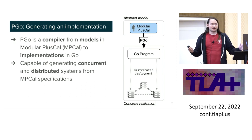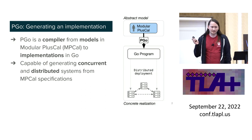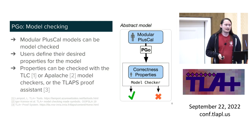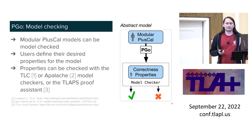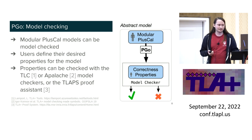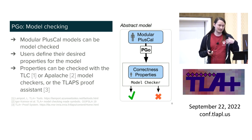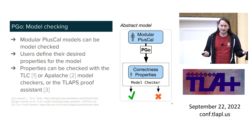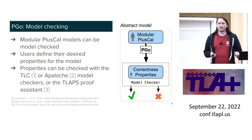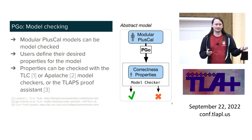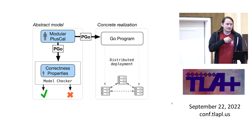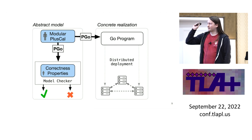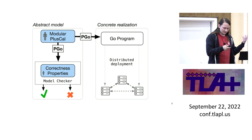To go back to the thousand-foot view: PGO is a compiler from models in MPCal to Go implementations. You can generate concurrent and distributed systems from these specifications. It also allows for model checking, because it generates basically TLA+. As a result it supports anything that can handle TLA+ — TLC, Apalache, TLAPS, or something that comes out next week. So you end up with this Y-shaped system where PGO can take you two directions: it can generate your Go program, or it can generate a verifiable thing.